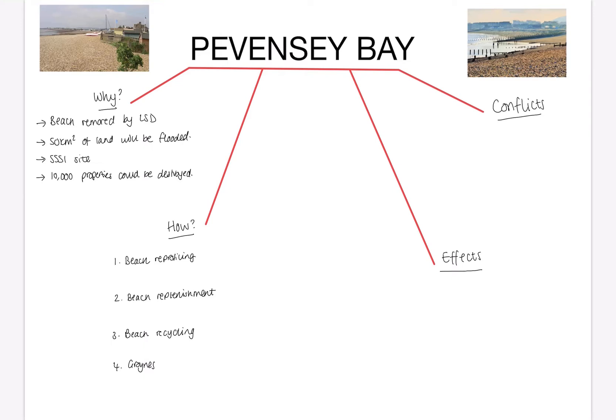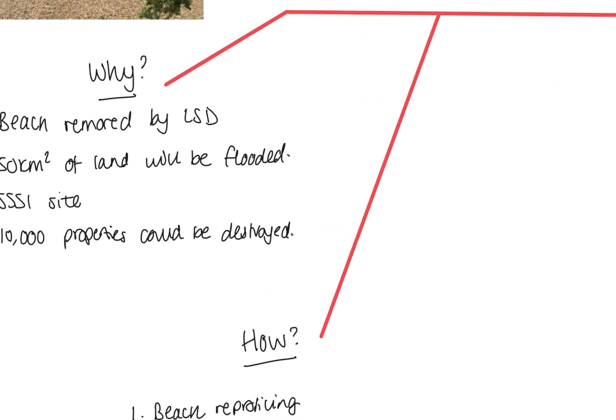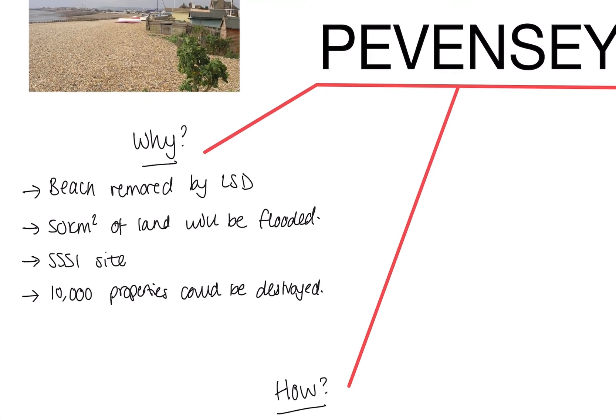So to recap, Pevensey Bay is located on the coast in East Sussex, in the southeast of England. Now here there were lots of reasons why this area needed to be managed. The first reason is that the beach is being removed rapidly by longshore drift. Longshore drift is that zigzag movement that transports sediment along the coast, leaving some areas particularly vulnerable to erosion as the sediment is being shifted away.